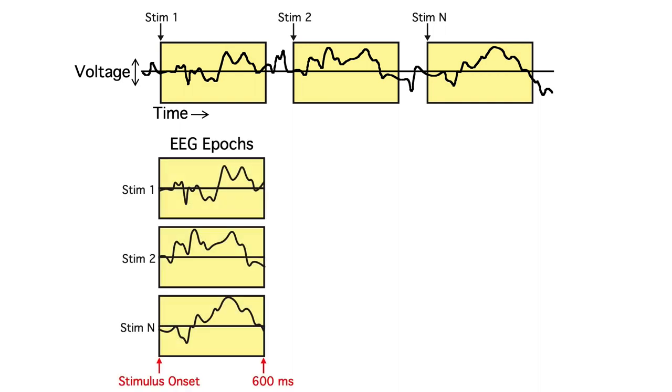Now we can take all the EEG epochs and line them up in time. In this example, each epoch contains 600 milliseconds of EEG following a stimulus onset. The epoch length depends on the nature of the specific experiment, but it's usually somewhere between 10 milliseconds and 2000 milliseconds.